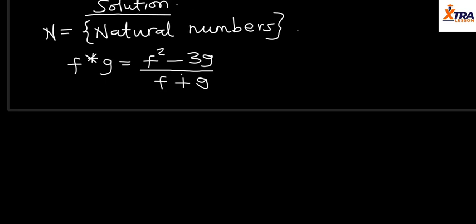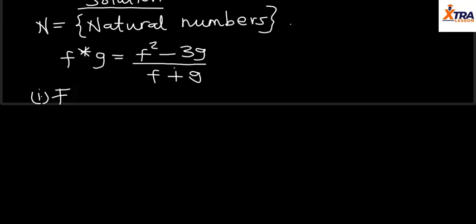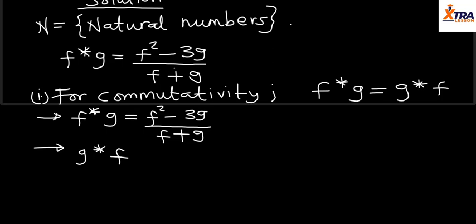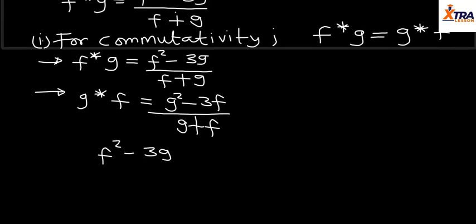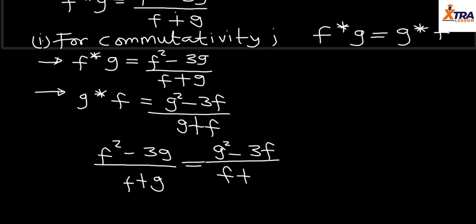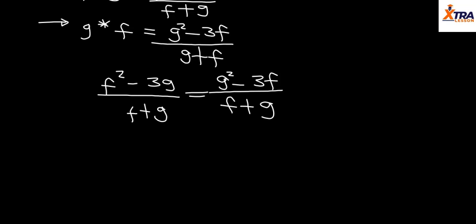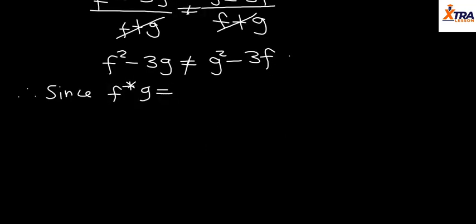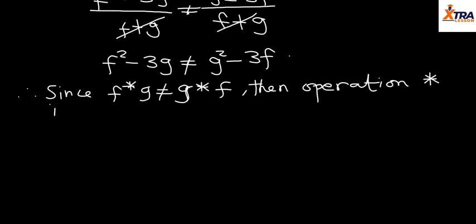For the commutative property, f★g must equal g★f. We know f★g = (f² - 3g) / (f + g), and g★f = (g² - 3f) / (g + f). Comparing these two, after simplification we find f² - 3g ≠ g² - 3f. Therefore, since f★g is not equal to g★f, the operation asterisk is not commutative on the set N.